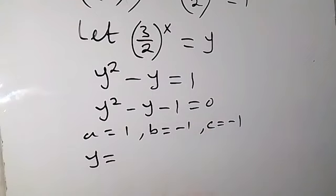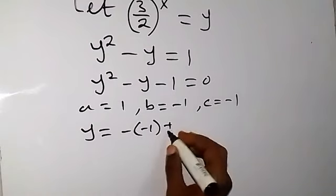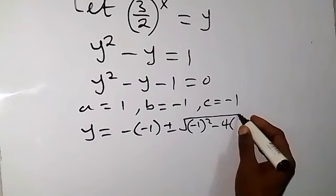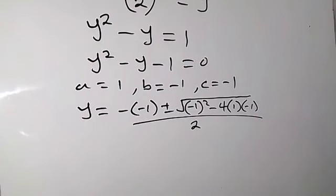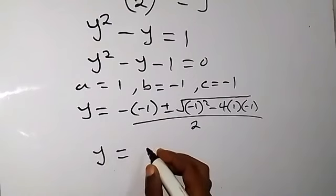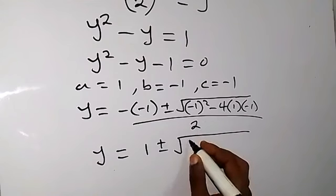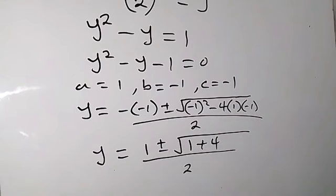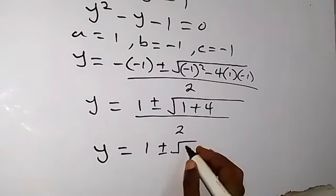From here we have y equals to minus b plus or minus square root of b squared minus 4ac, all over 2a. That's minus minus 1, plus or minus square root of minus 1 squared, minus 4 times 1 times minus 1, all over 2 times 1, that's 2. This gives us y equals to 1 plus or minus square root of 1 plus 4, over 2. And y equals to 1 plus or minus square root of 5 over 2.